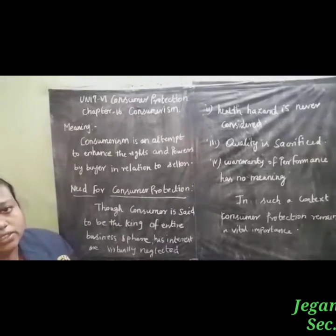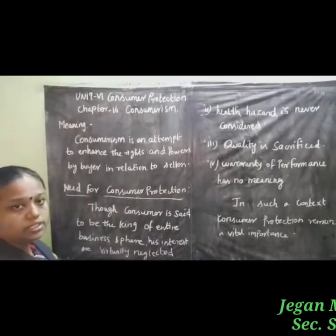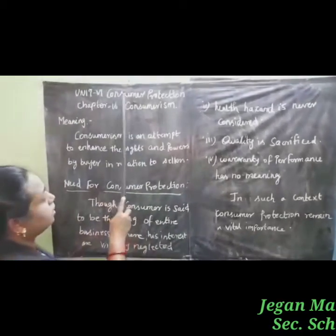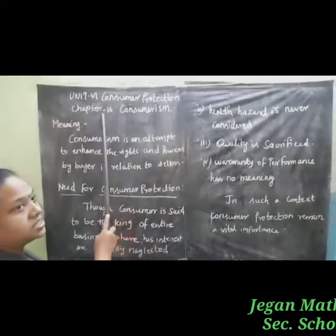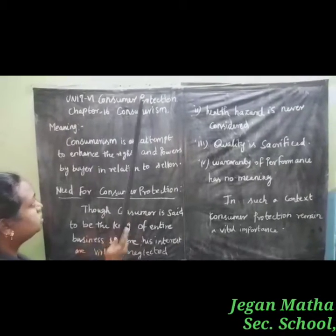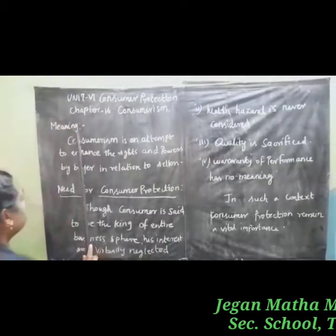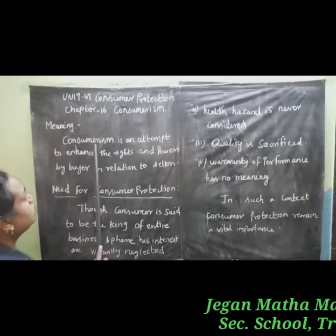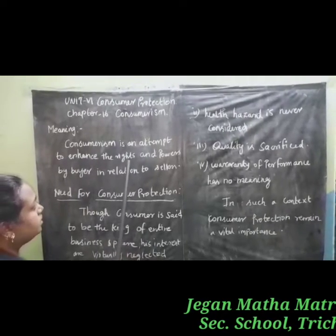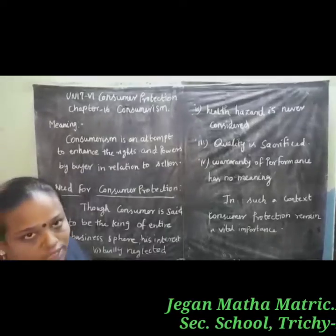Good morning students. Standard 12 Accountancy. So in this video, we are going to discuss Unit 6, Consumer Production, Chapter 16, Consumerism. Consumerism is an attempt to enhance the rights and powers of the buyer in relation to the seller.